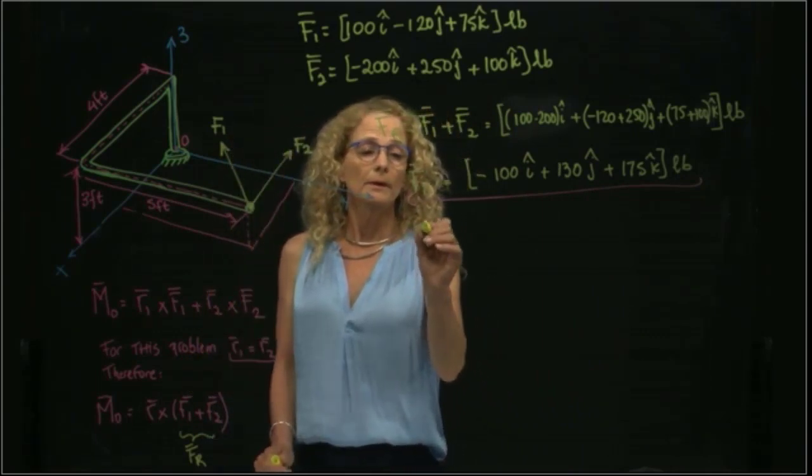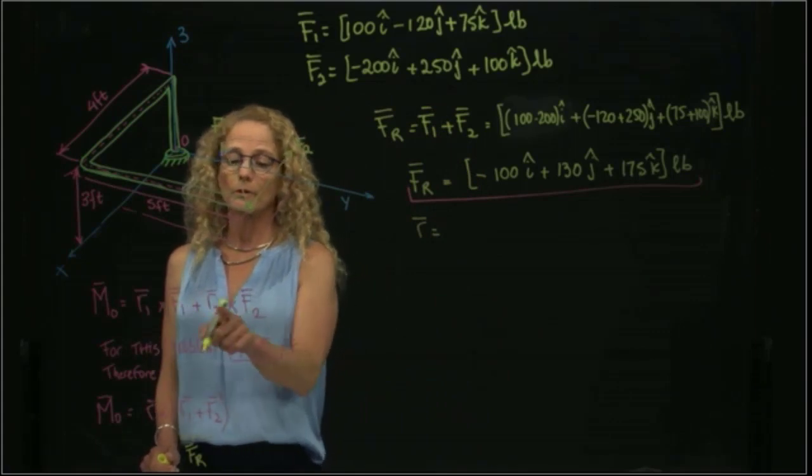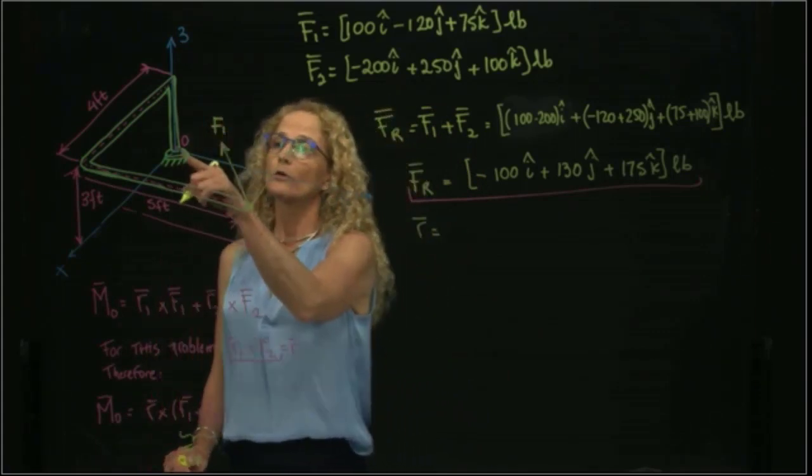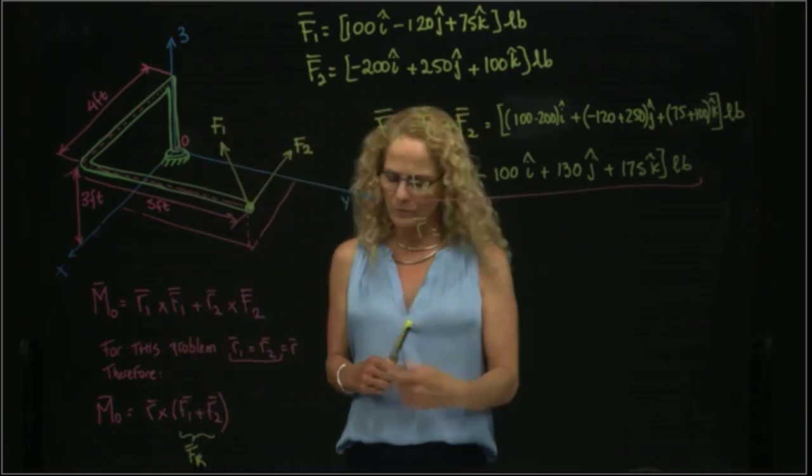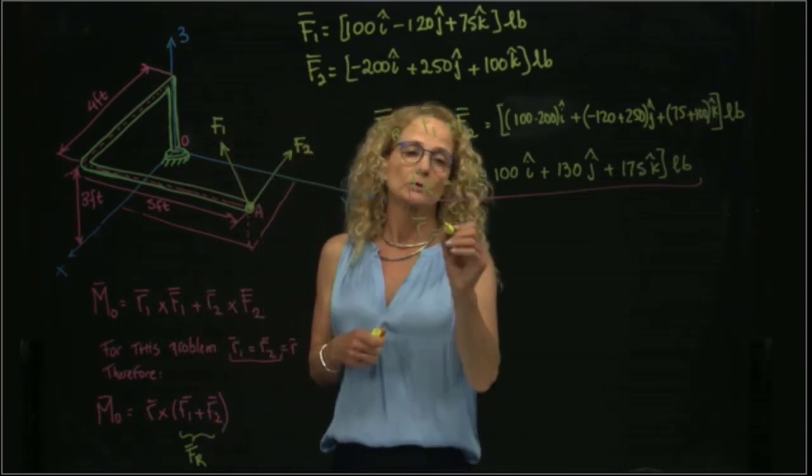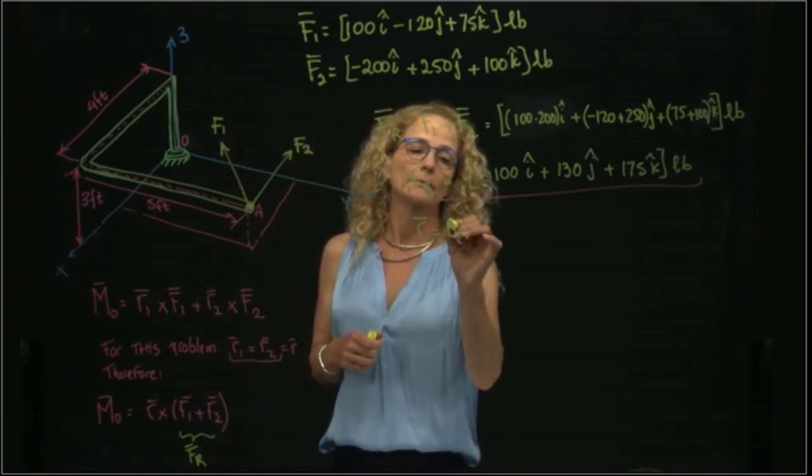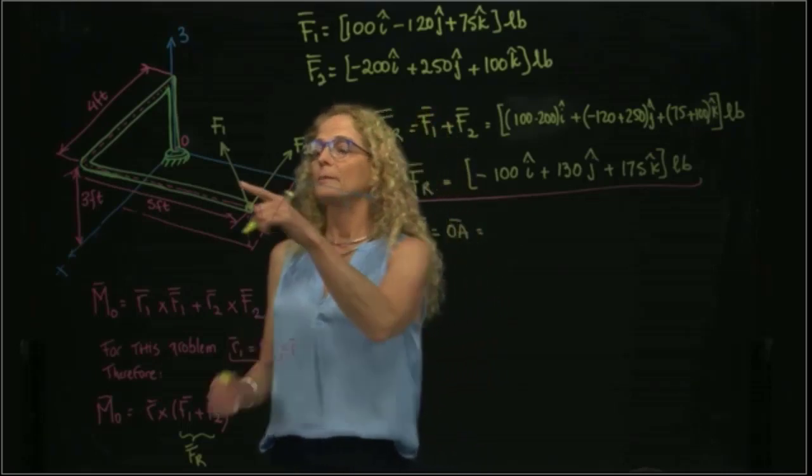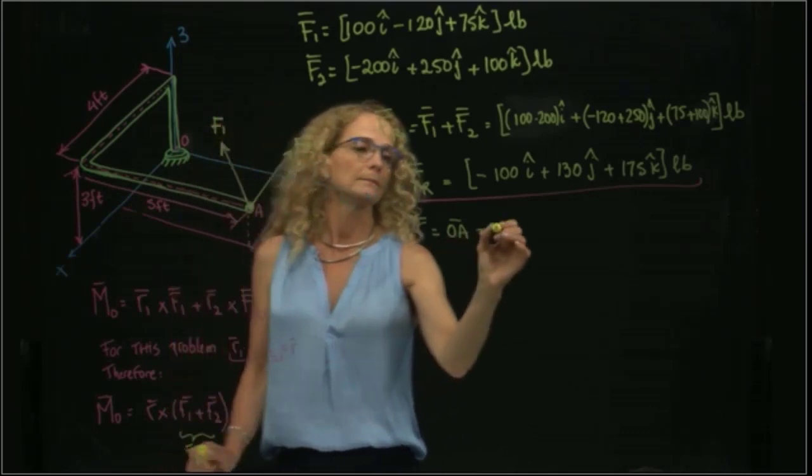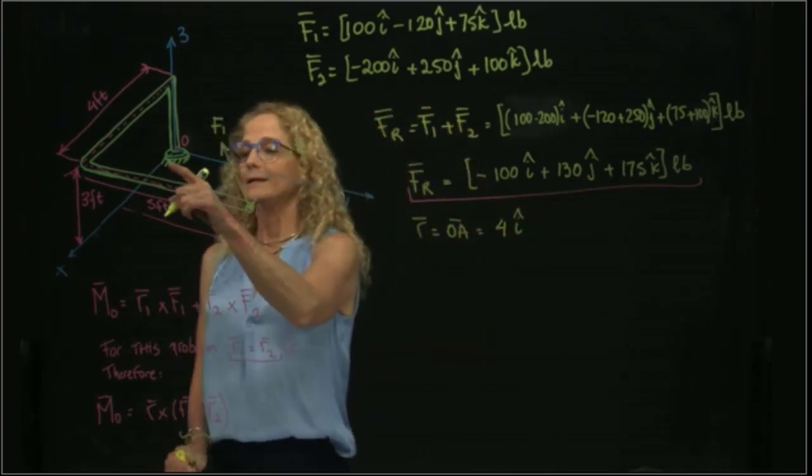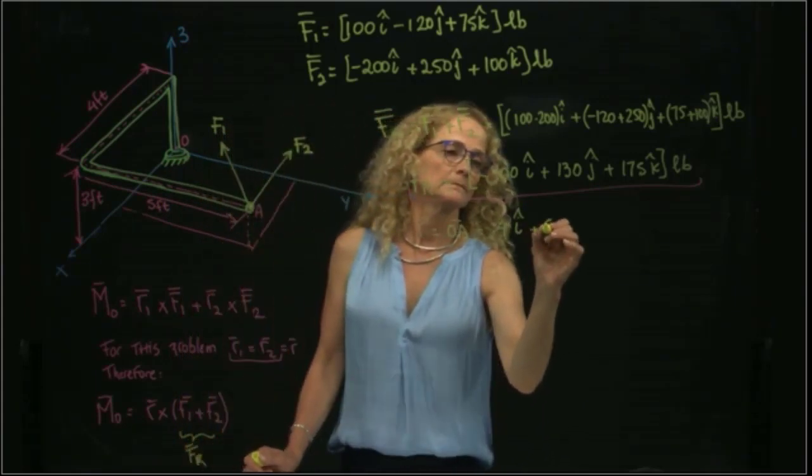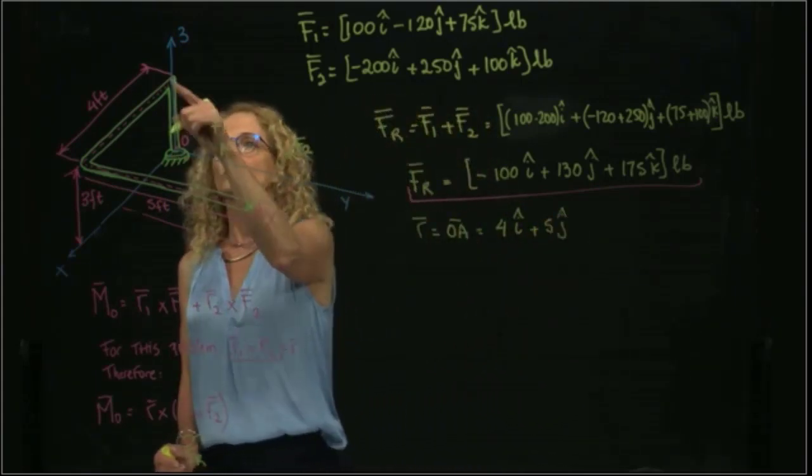R, I need R, which is common for the two forces and is the position vector from O to the point where the forces are applied, which is point A. My R is the position vector to A. That will be equal to: I cover 4 feet in I, in J I cover 5 feet, and in K I go 3 feet.